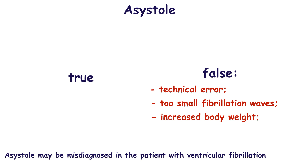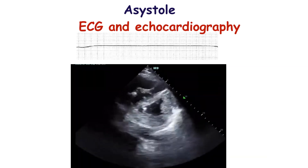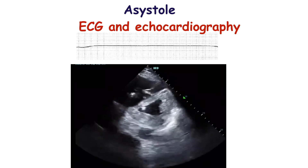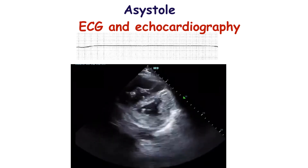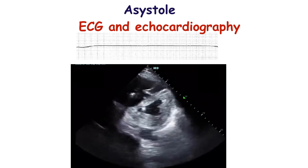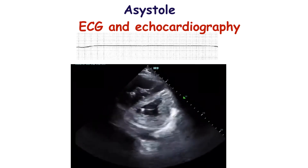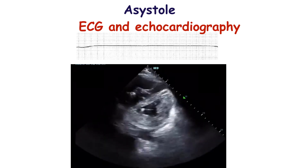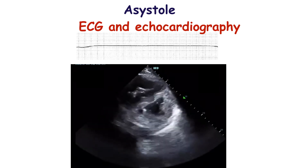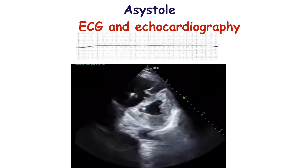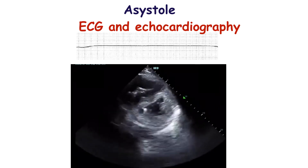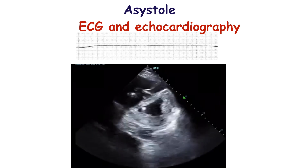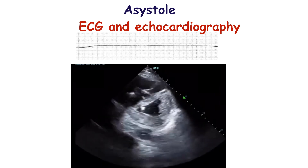This is ventricular fibrillation masked as asystole. In such a case, defibrillation would be effective. To make a correct diagnosis, echocardiography is used. In the case of ventricular fibrillation or ventricular tachycardia, echocardiography reveals fibrillation or quivering of the ventricles without an effective contraction. Fast-performed echocardiography may take only 5 seconds and allows a correct diagnosis and appropriate management to be chosen.